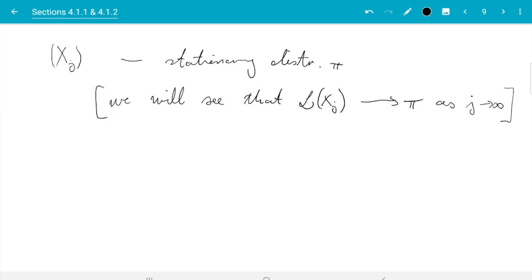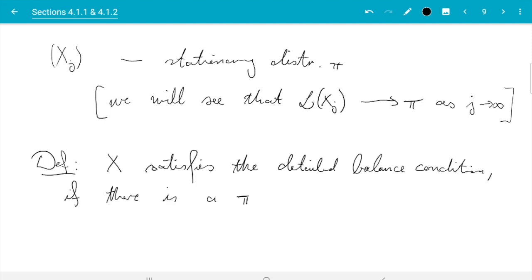So for the discrete case, we first consider something which is called the detailed balance condition. So X satisfies the detailed balance condition if there is a probability vector pi such that pi_x p_xy equals pi_y p_yx for all x and y in the state space S. And here p as before is the transition matrix and little p_xy are the elements of the transition matrix.